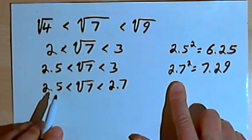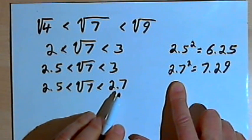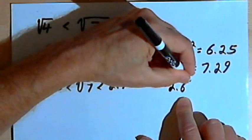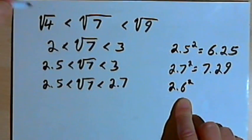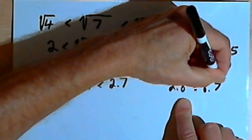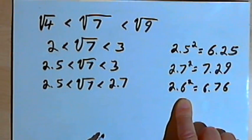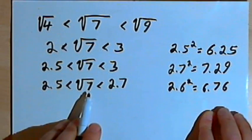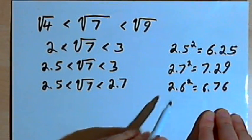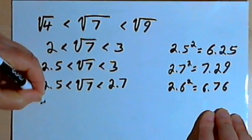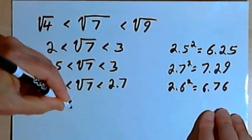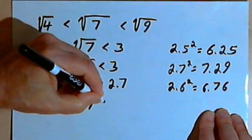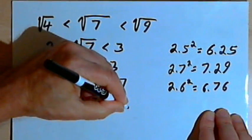I'm looking for a number between 2.5 and 2.7, so I'll try 2.6. When I square 2.6, I get 6.76. Since 6.76 is less than 7, the square root of 6.76, or 2.6, would be less than the square root of 7. So: 2.6 < square root of 7 < 2.7.